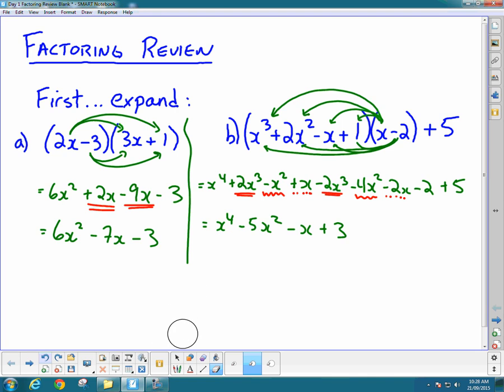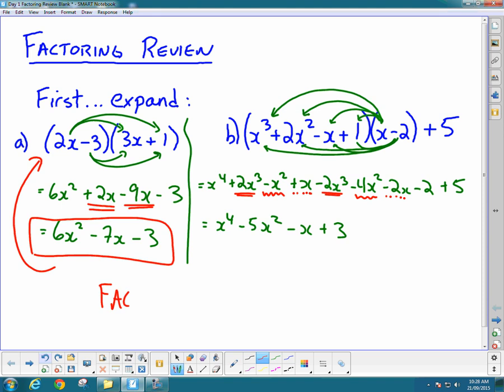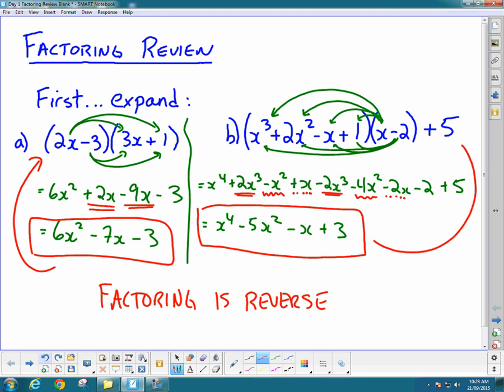That's the expansion review, but what we're going to be doing is going backwards. We're going to start with this trinomial and want to go backwards - that's what factoring is, the reverse of expansion. We know how to factor simple trinomials from grade 10. Now we've got new polynomial stuff like quartics that we're going to learn how to factor. Today we're going to make sure we remember all the different types of factoring we already know.